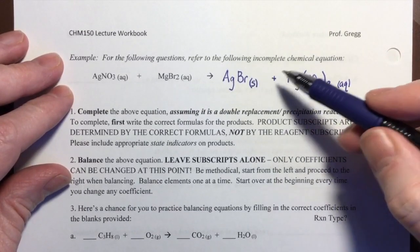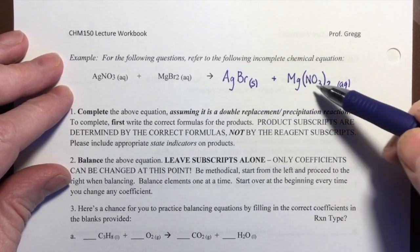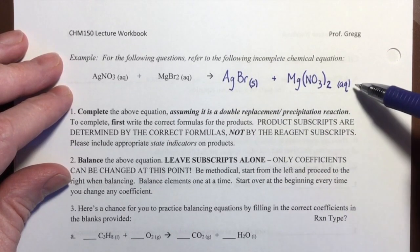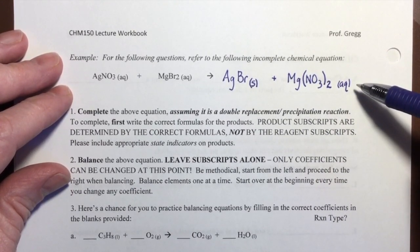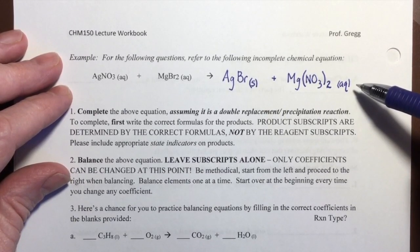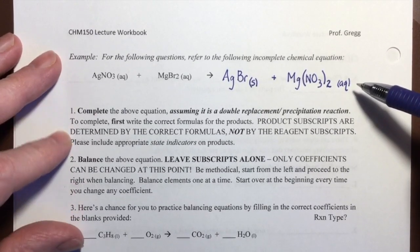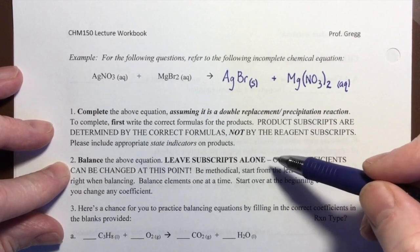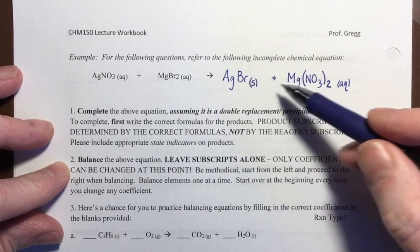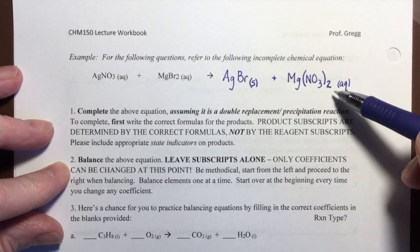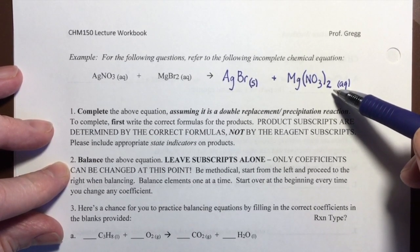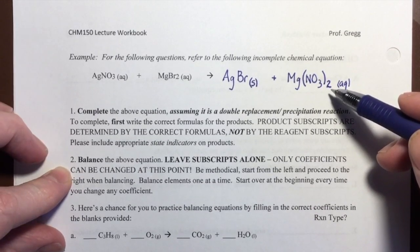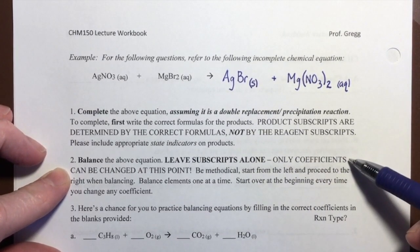Now that we have written the correct formulas with the correct subscripts and the correct state indicators, we have completed the reaction. But we have not yet tried to balance it. Now that we've completed the reaction, we're going to balance it. And when we balance the equation, step two here, we leave the subscripts alone. We can never change these subscripts ever again. The subscripts have to be these numbers in order to charge balance. And so I cannot change them now. The only thing I can change now to balance the equation are the coefficients.